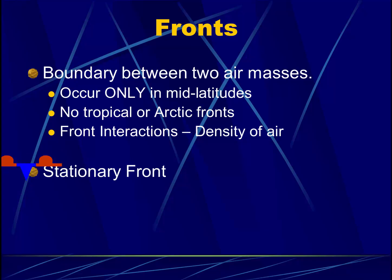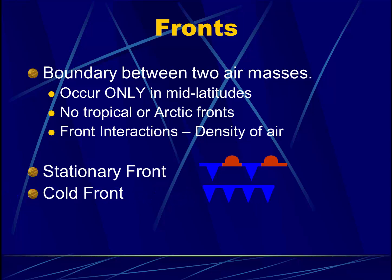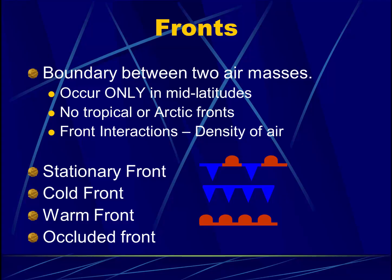There's the stationary front — on weather maps it's modeled with a triangle and bubble alternating. A cold front is modeled with a line with triangles; you might want to think of these as icicles. The warm front is modeled with a line with bubbles, like boiling water. Finally, the fourth front is the occluded front — the triangle and bubbles are pointing in the same direction. The colors are also significant: stationary fronts alternate red and blue, cold fronts are blue, warm fronts are red, and occluded fronts are pink or purple.